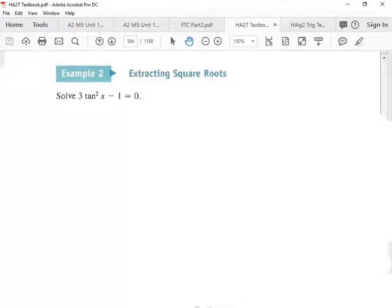Get the trigonometric function alone first, so we got 3 tan²x = 1. Now then we have to divide by 3, and so I get tan²x = 1/3.